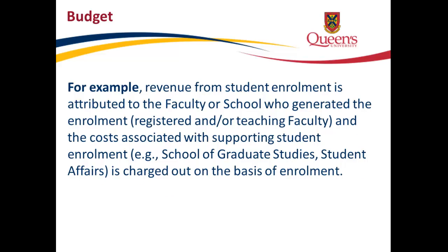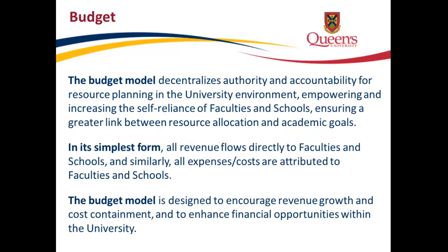For example, revenue from student enrollment is attributed to the faculty or school who generated the enrollment — the registered and/or teaching faculty — and the costs associated with supporting student enrollment. The budget model decentralizes authority and accountability for resource planning, empowering faculties and schools and ensuring a greater link between resource allocation and academic goals. In its simplest form, all revenue flows directly to faculties and schools, and all expenses and costs are attributed to faculties and schools. The budget model encourages revenue growth and cost containment.